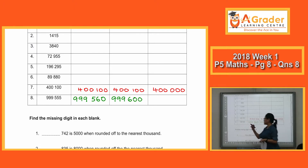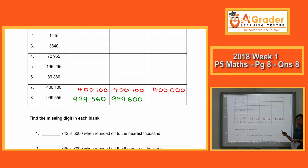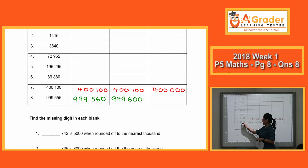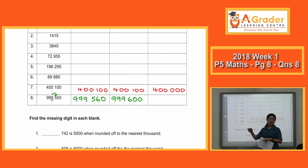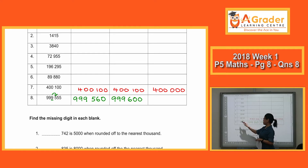The last step — nearest thousand. Which digit is in the thousandth place? The last nine. Now we look to the right. Up. Up means last one.